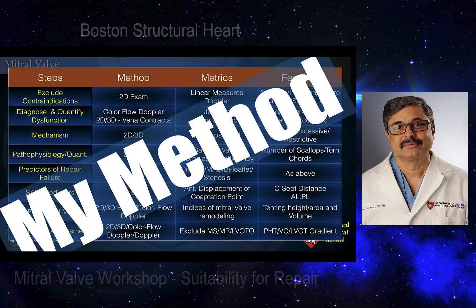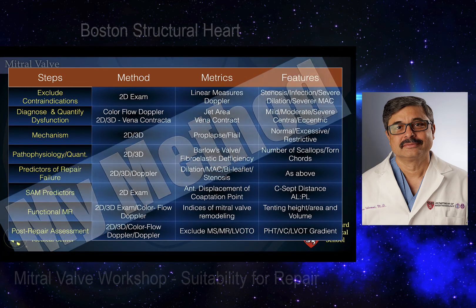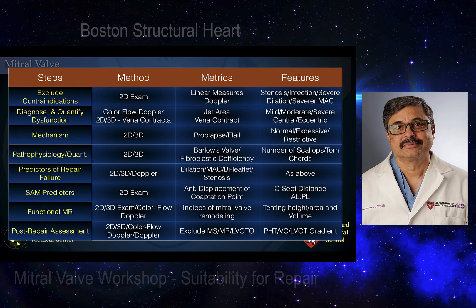My method in the operating room is consistent and algorithmic, starting with exclusion of contraindications, diagnosis and quantification of dysfunction, identifying the mechanism, diagnosing the pathophysiology and quantification of the valve with 2D and three-dimensional echocardiography, exclusion of predictors of repair failure and SAM predictors, and finally the assessment of functional mitral regurgitation and post-repair assessment of the mitral valve.